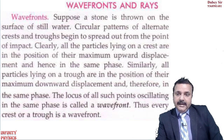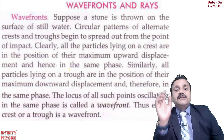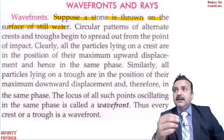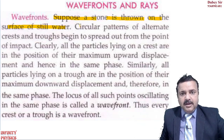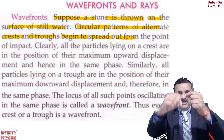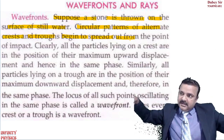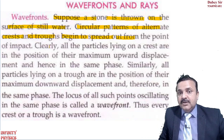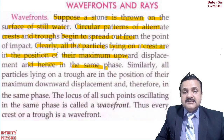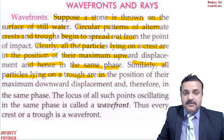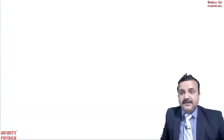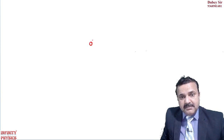According to Huygens' principle, light travels in the form of wavefronts. To understand what a wavefront is, suppose a stone is thrown into the surface of still water. You see a circular pattern of alternating crests and troughs spreading out from the point of impact. All particles lying on a crest are at maximum upward displacement and hence in the same phase. Similarly, all particles on a trough are at maximum downward displacement and in the same phase.